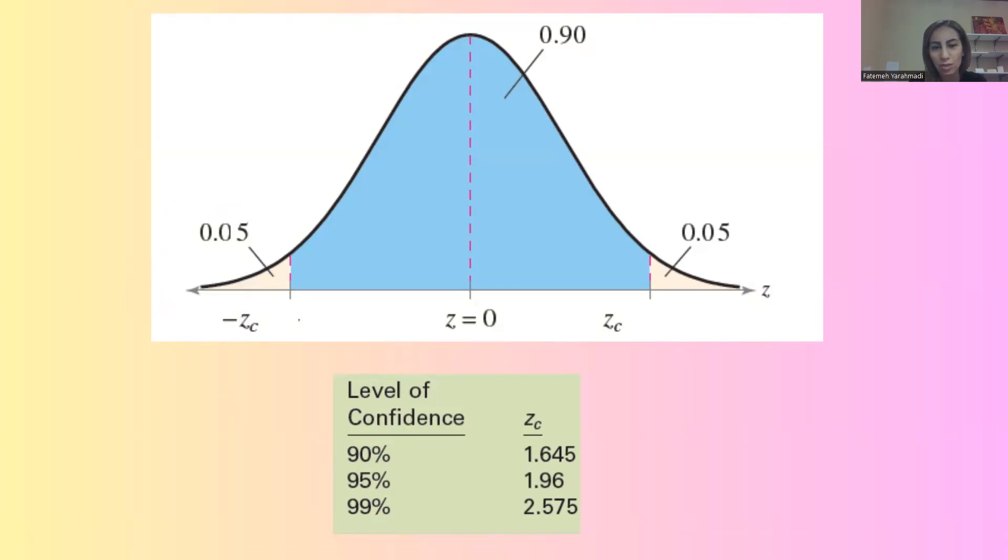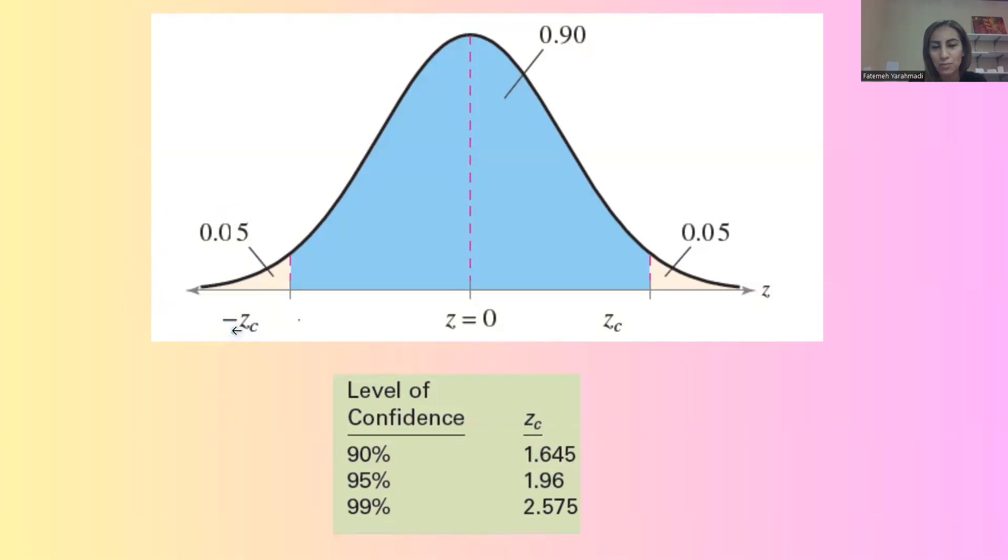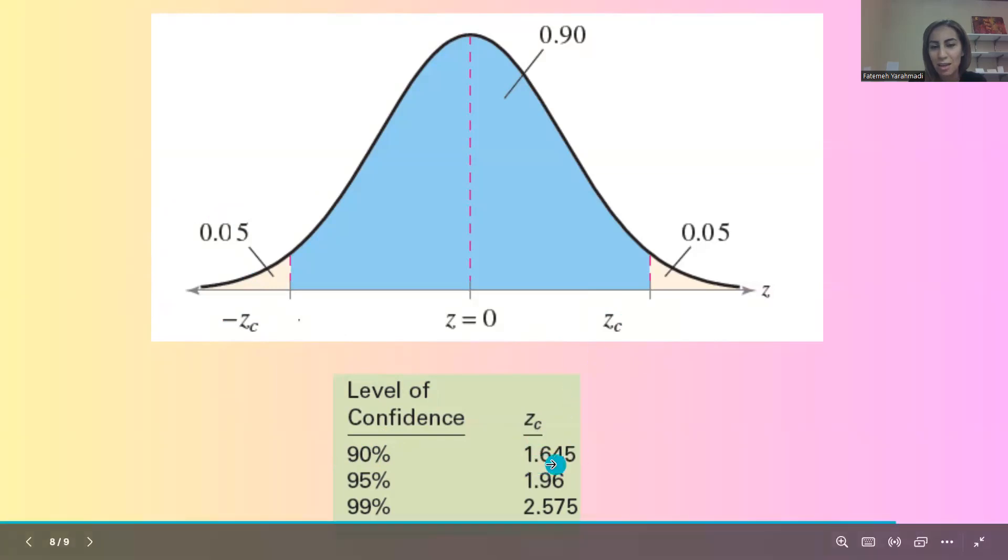If you use inverse norm, you can find the Z sub C or the critical value as negative 1.645. The positive one is on the right-hand side, 1.645.